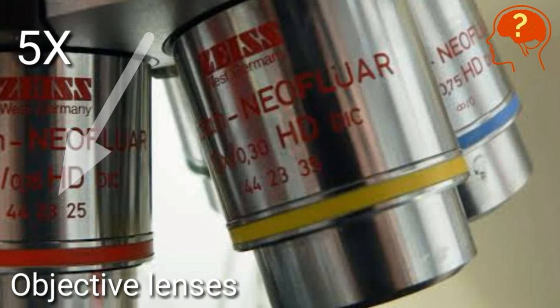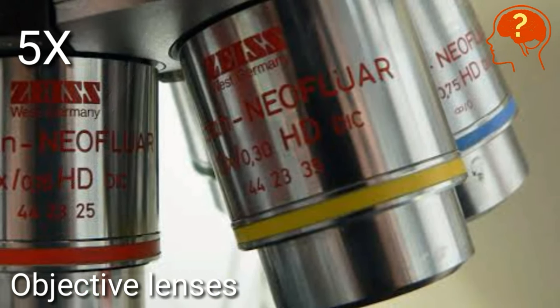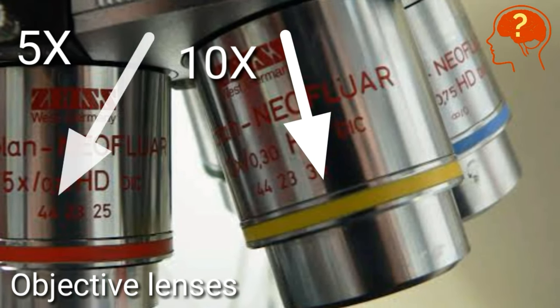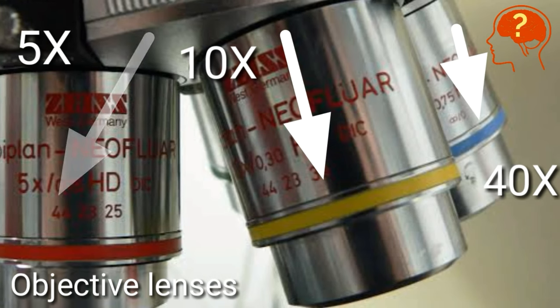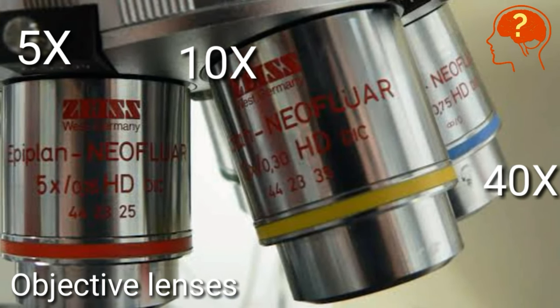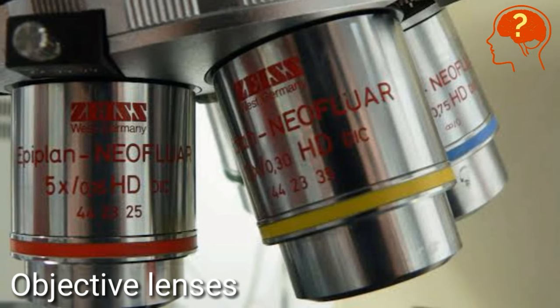The objective lens having red line is 5x, objective lens having yellow line is 10x, and that having blue or green line is 40x. 5x means it will magnify the original size of the specimen.